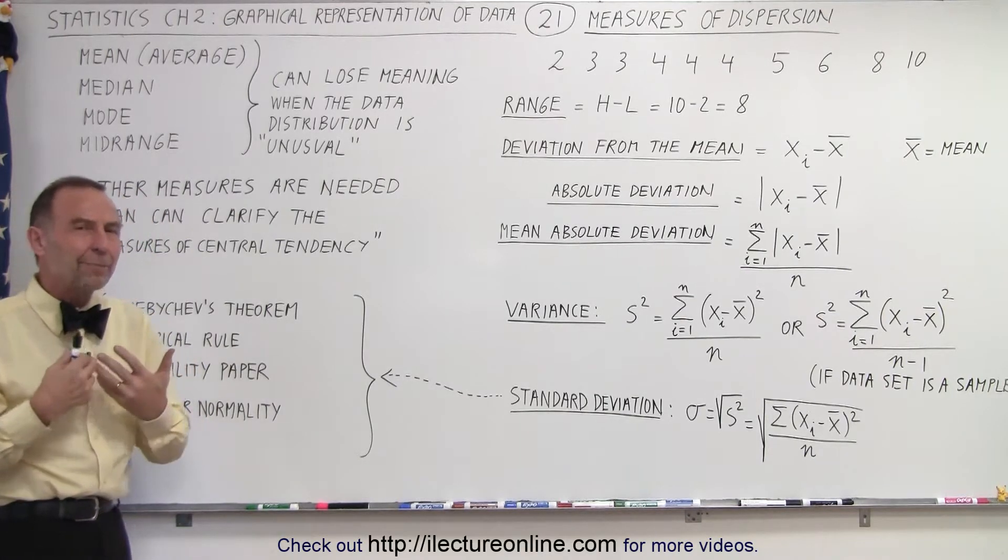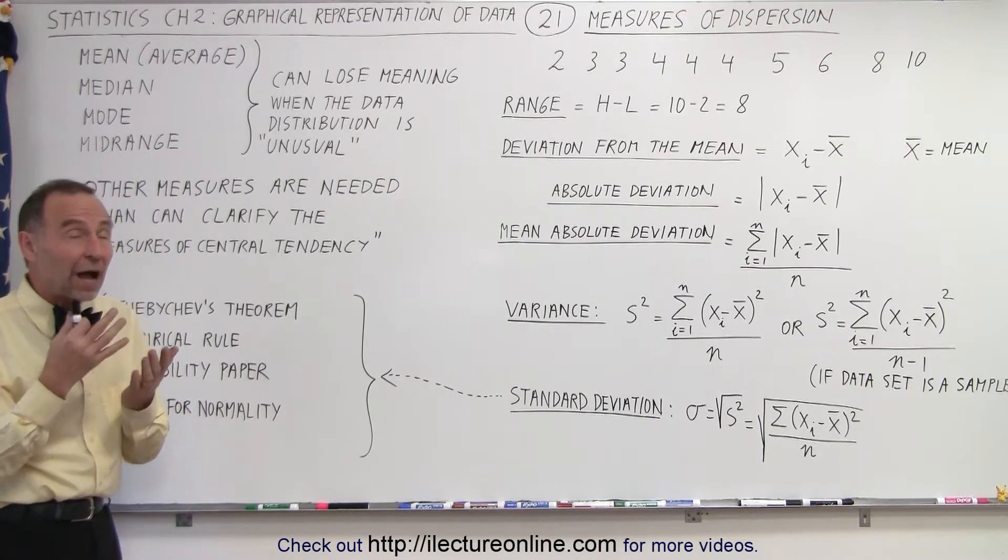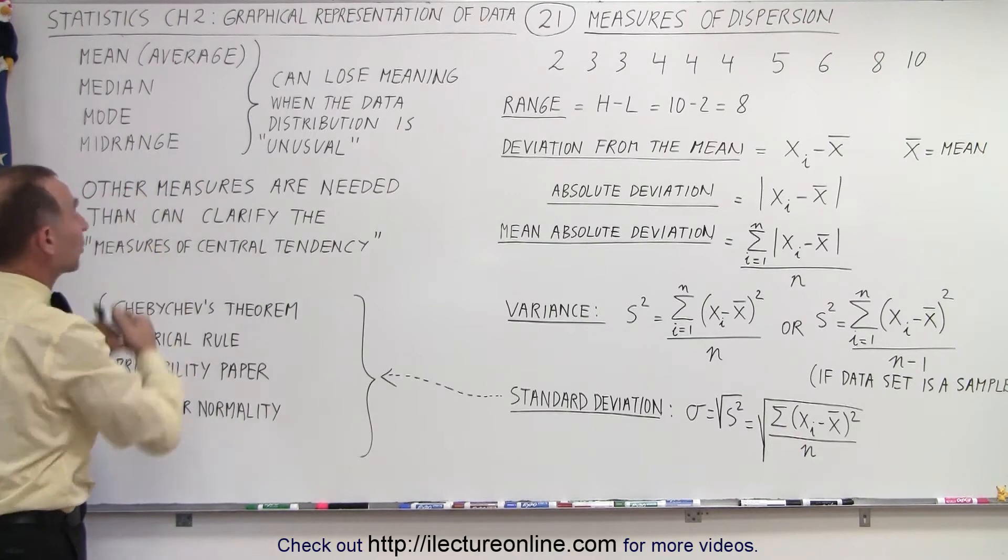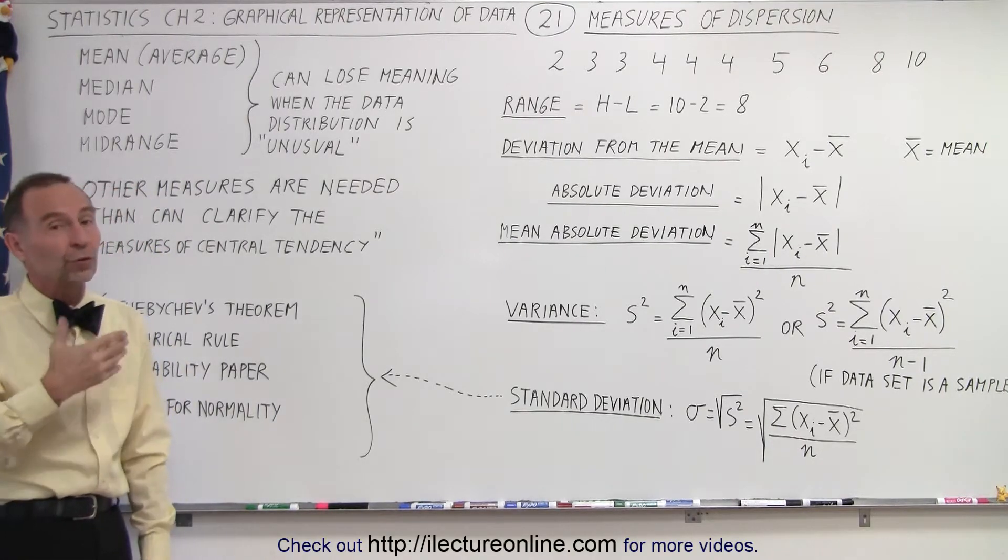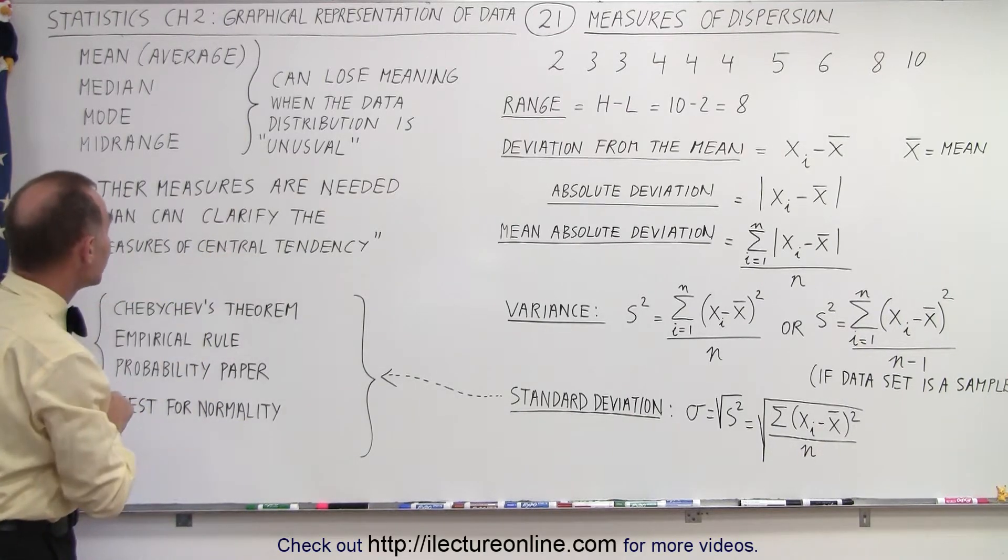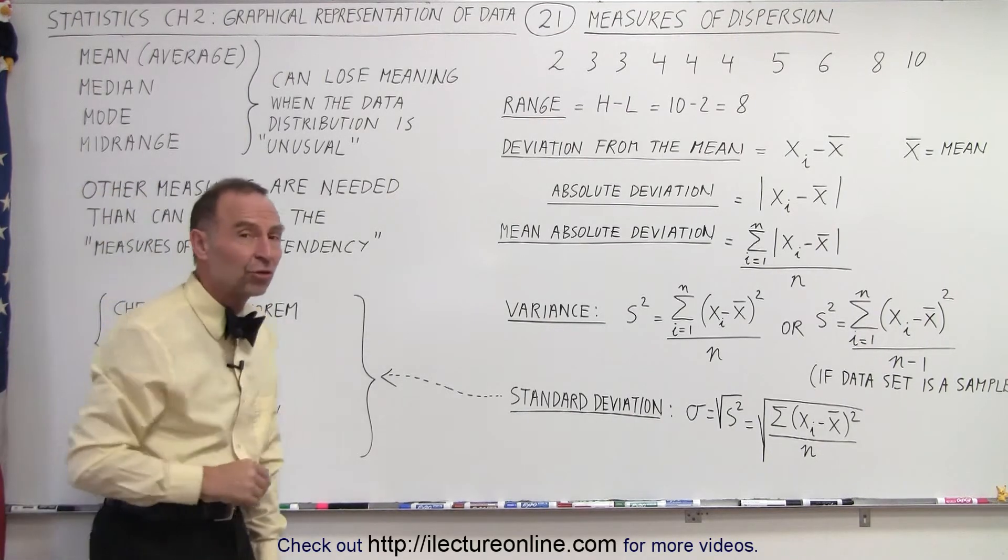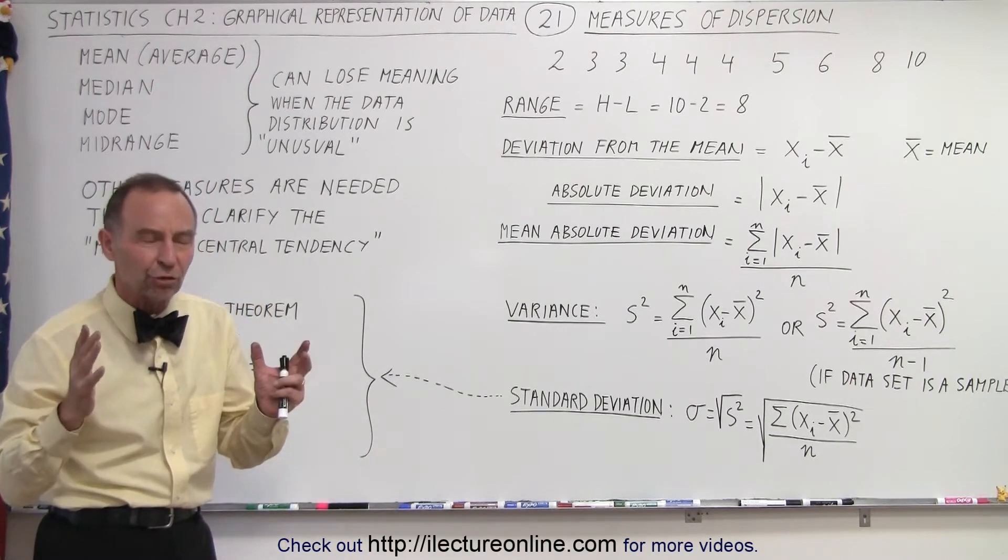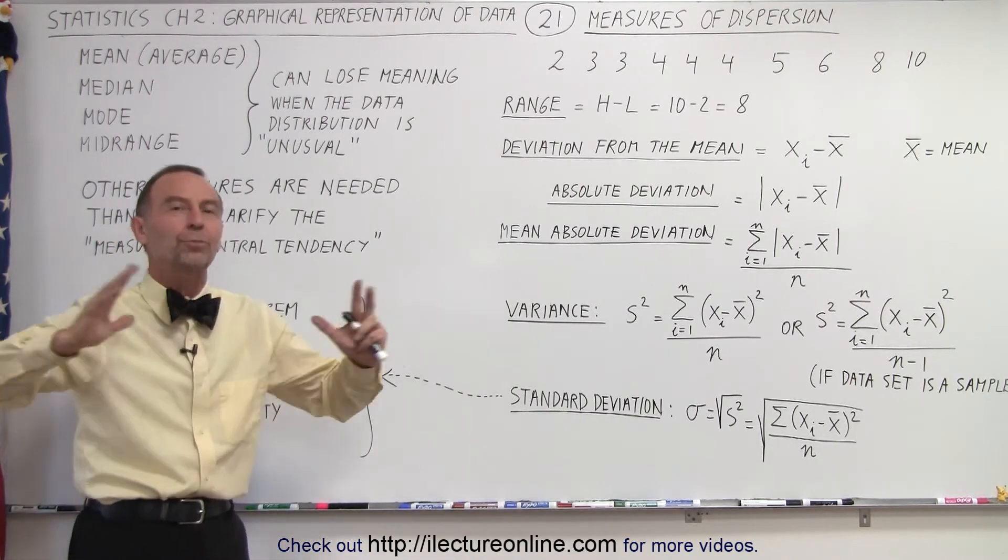And so to get a better feel for how valuable or how accurate or how useful those measures are, and they're called measures of central tendency, we need some additional measures. They're called measures of dispersion. We want to see how the data is dispersed.